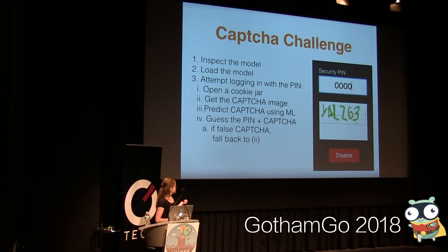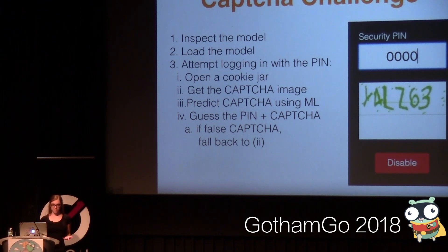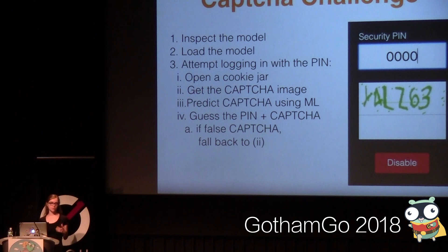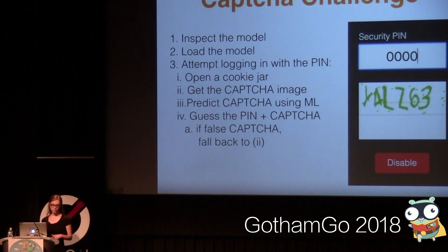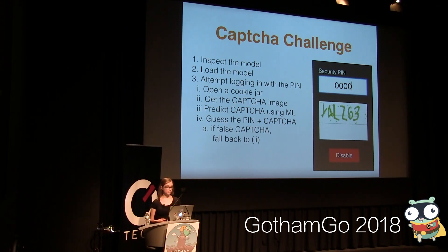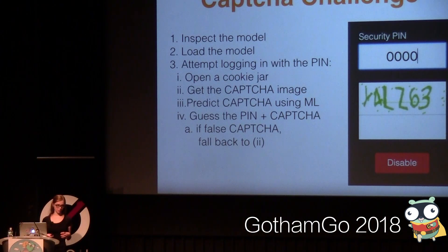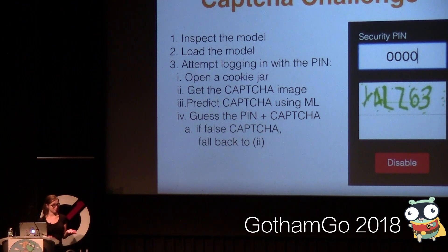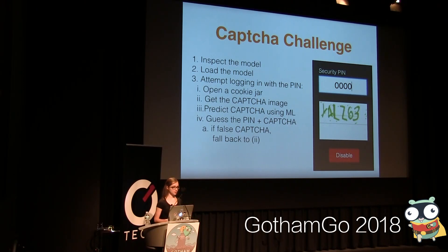So you get the model and you inspect it, which means you run a CLI command that shows how many inputs, how many outputs, and the names of the nodes, which you can later use in the code. You load the model and then attempt to log in by opening a cookie jar, getting the image, using machine learning to predict it, taking the pin from the current loop, and using both to do the login. In case the CAPTCHA fails, your cookie jar helps you refresh, get the new CAPTCHA, and with the same pin, try to log in.